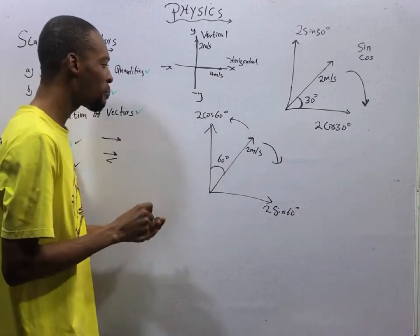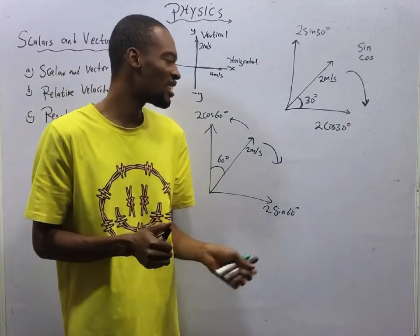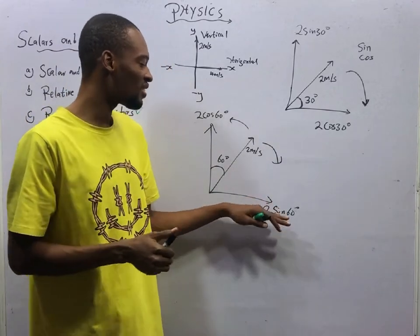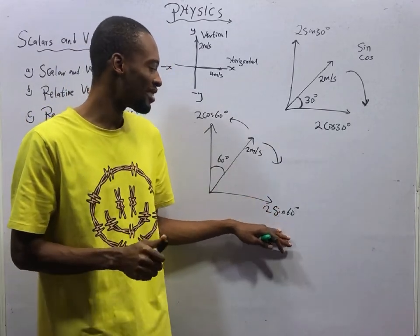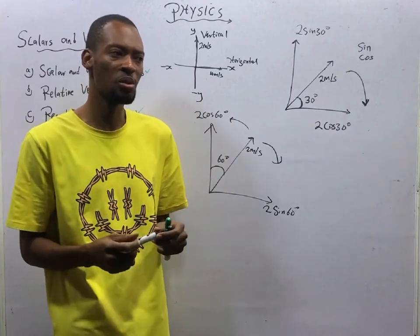So your mentality should not be that if you are resolving to the horizontal it must be cos and to the vertical it must be sin. It depends on where you are — whether you are opening or you are closing the angle.